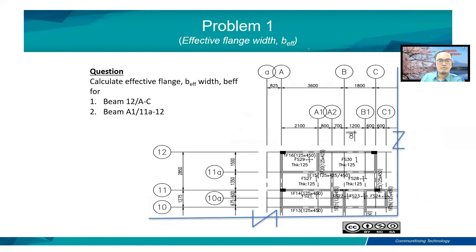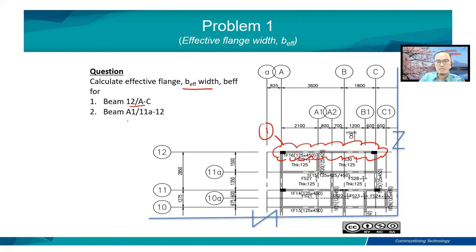Here is Problem number one: calculate the effective flange width for the beam located at grid 12/A to C. This is beam number one. Beam number two is A1/11A to 12. Grid 11A is located here, and A1 is here. Please solve this problem so we can discuss it during our tutorial class.